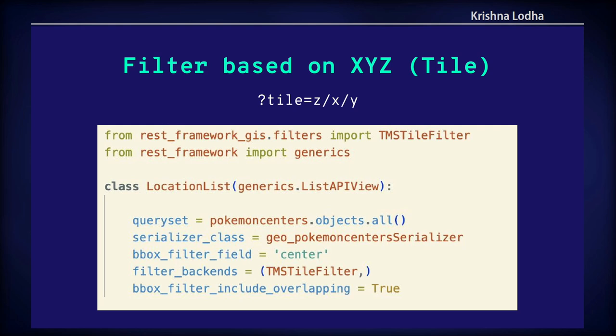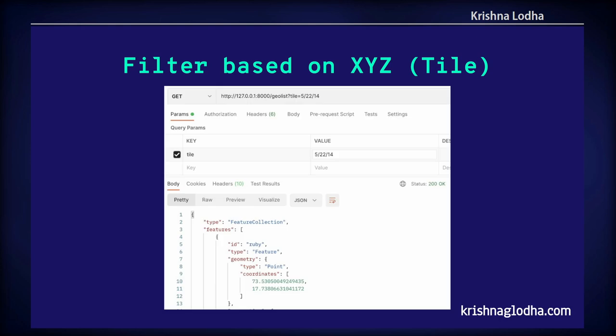Next we have a filter based on XYZ tiles. If you want to use your data as a TMS, you can do that by using the TMS tile filter, where you provide the zoom, x, and y of that particular region and it will return the data for you. For example, at zoom level 5, x value 22, and y value 14, it will return the relevant data. Depending on what client you're using — Leaflet, OpenLayers, MapLibre, or Mapbox — all of them have features where you can get these tile coordinates.